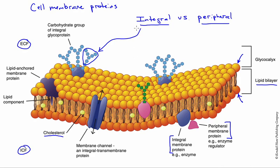Another group would be the lipid-anchored proteins, demonstrated over here. G-proteins would be a good example — proteins involved in signal transduction across the membrane. For instance, a hormone that interacts with this cell would act through a receptor and a G-protein to initiate an intracellular action. These lipid-anchored proteins are literally tied to and have a lipid component embedded in the hydrophobic core.